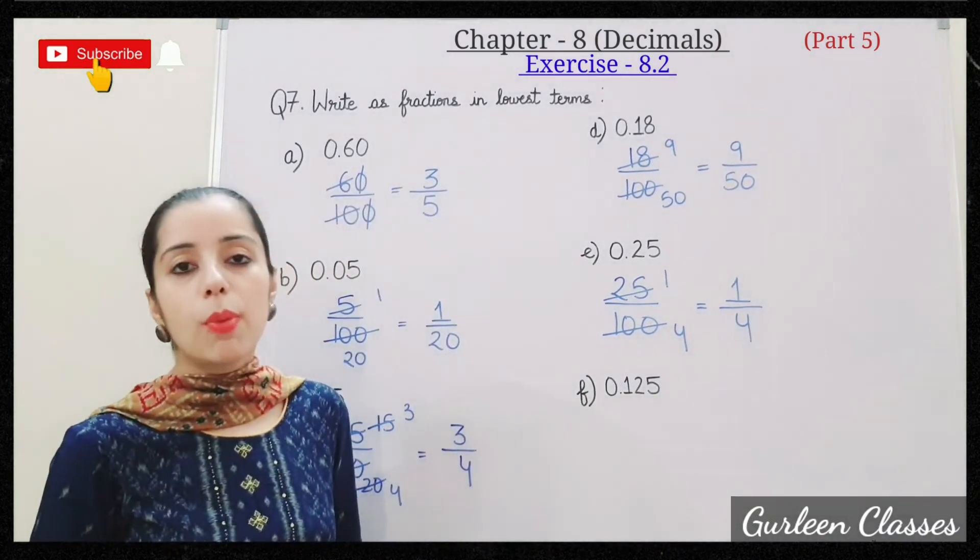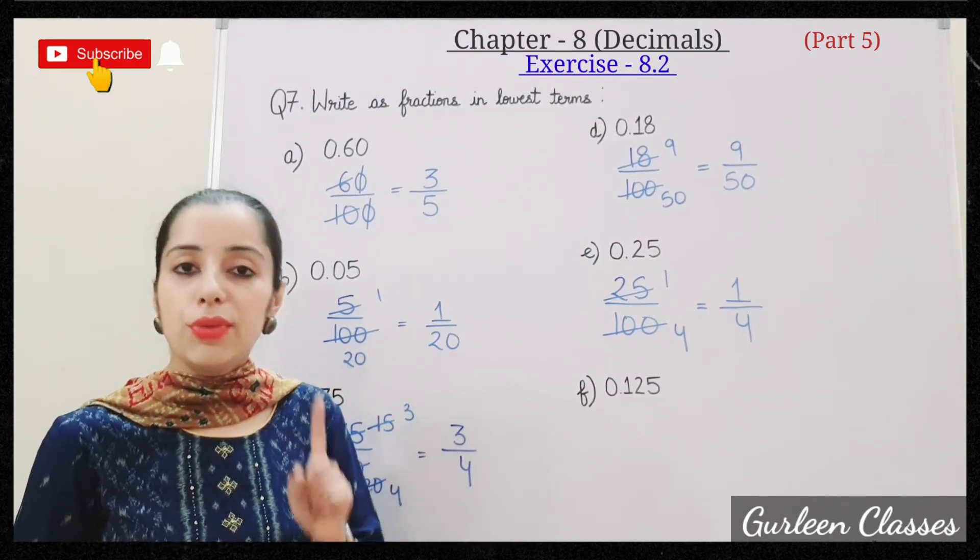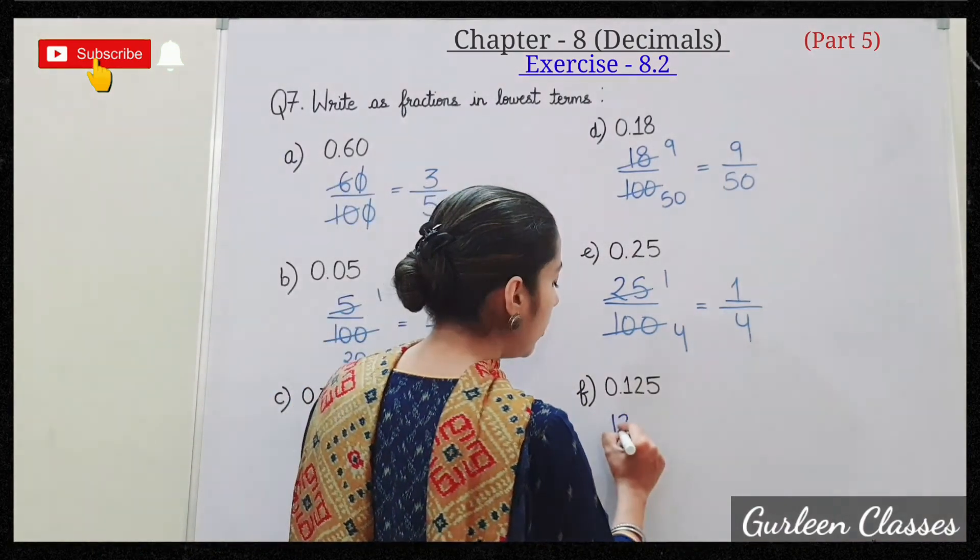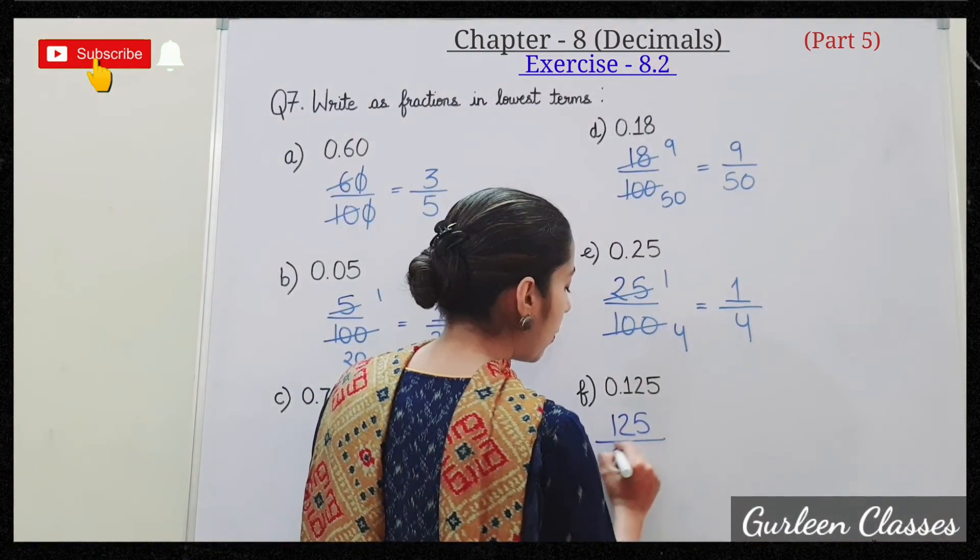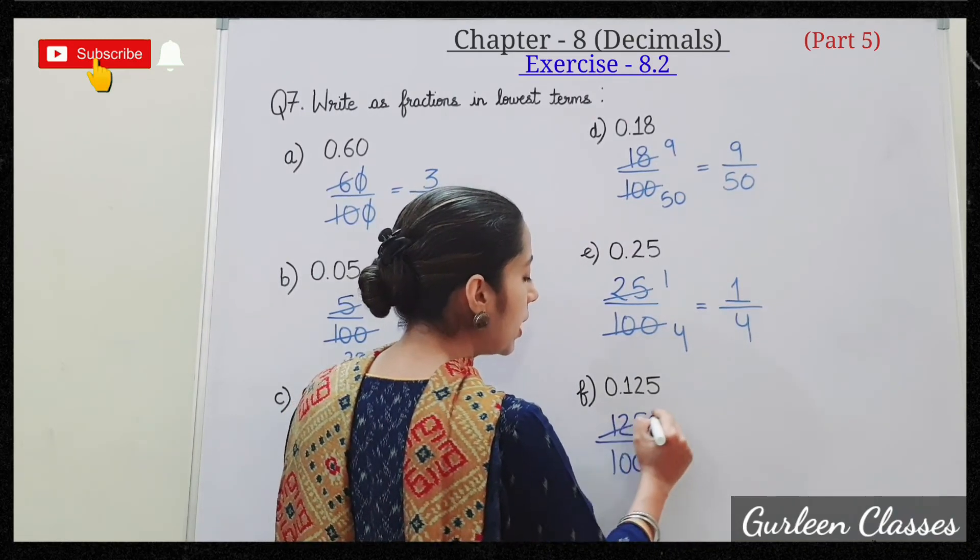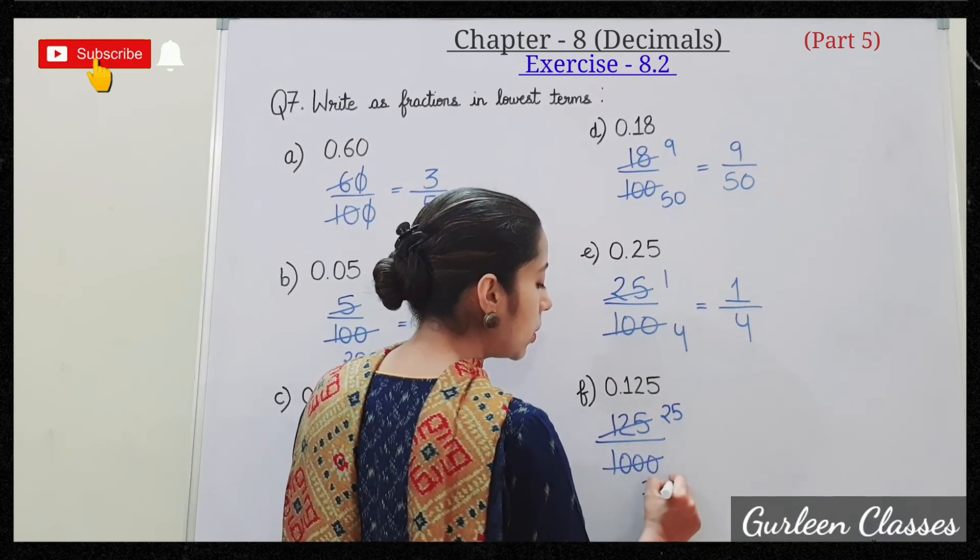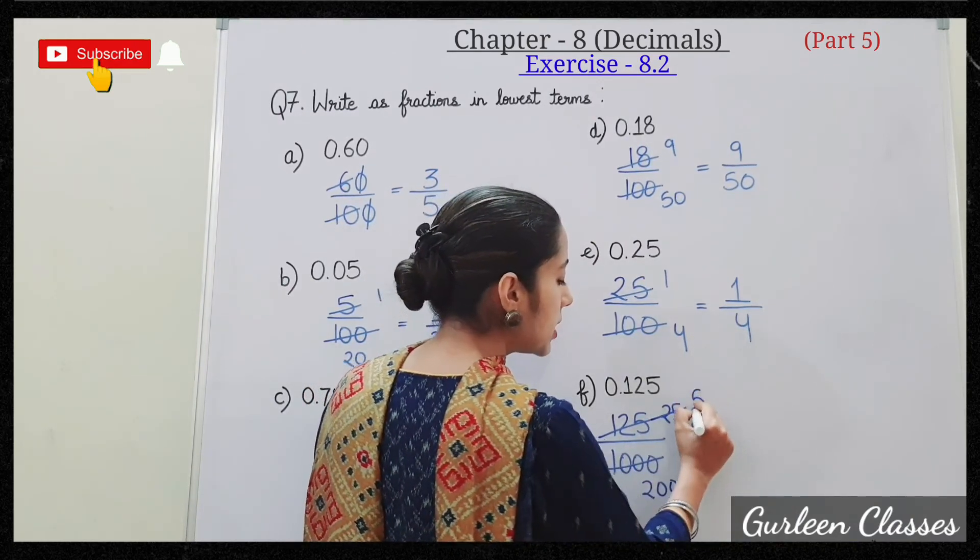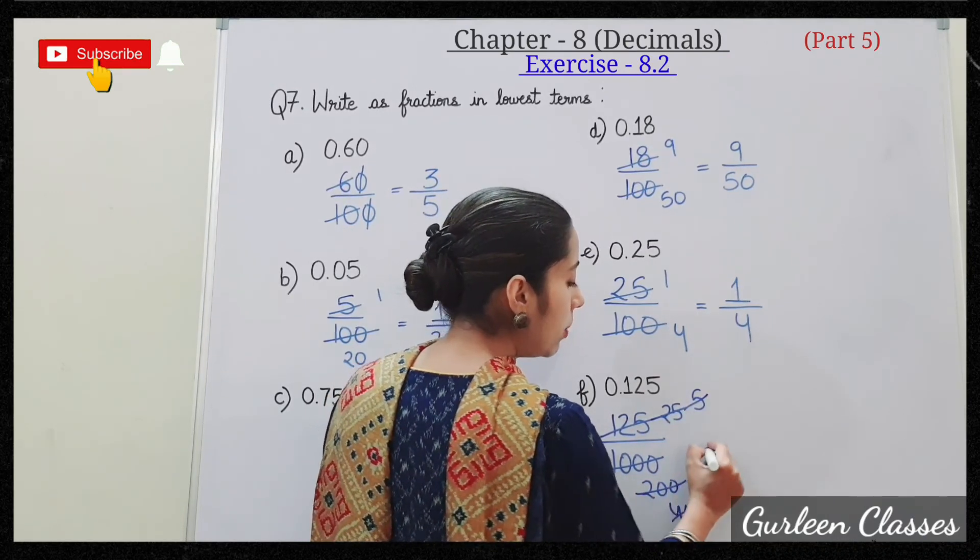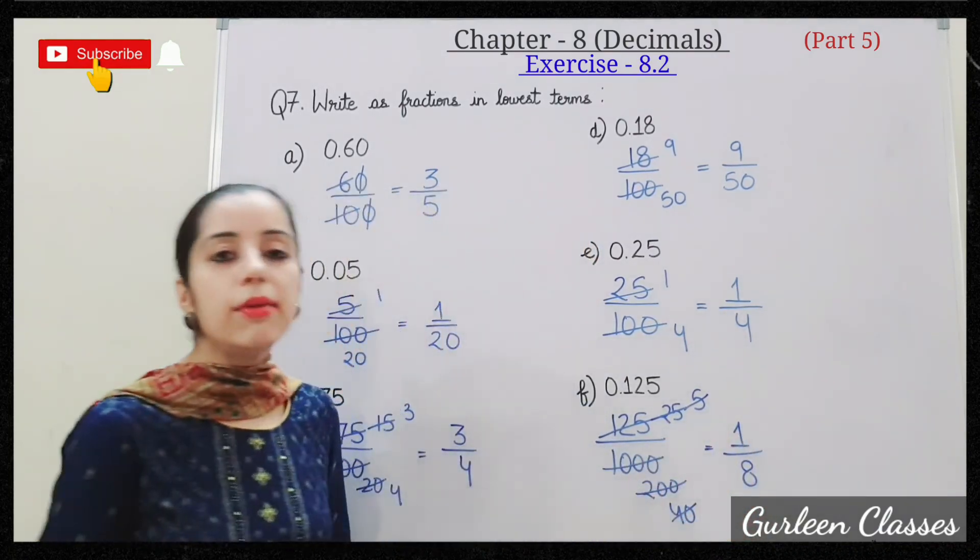F: 0.125. So here after decimal point we have 3 digits. In the denominator there will be 3 zeros. So it will be 125 upon 1000. So let us divide by 5. 5 twenty-fives are 125, 5 two-hundreds are 1000. 25 upon 200. Divide again by 5. 5 fives are 25, 5 forties are 200. Answer is 5 upon 40. Divide by 5 again. 5 ones are 5, 5 eights are 40. Answer is coming 1 upon 8.